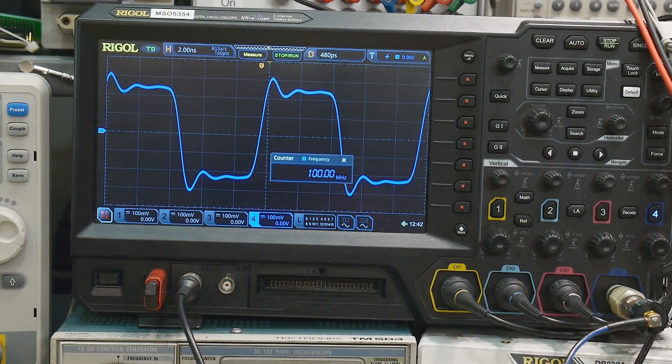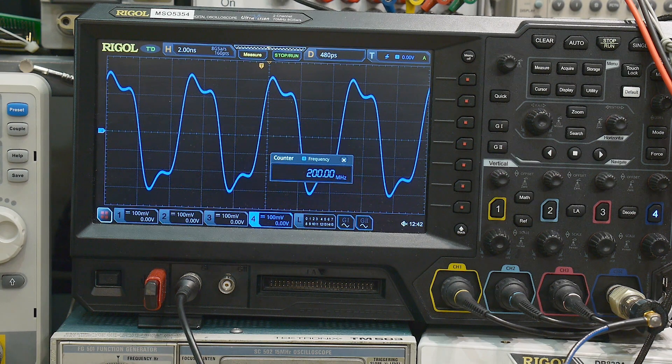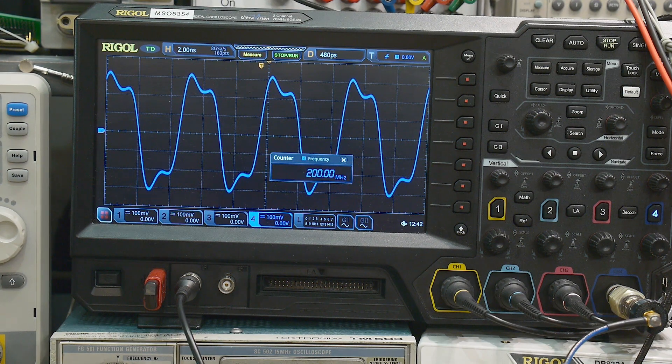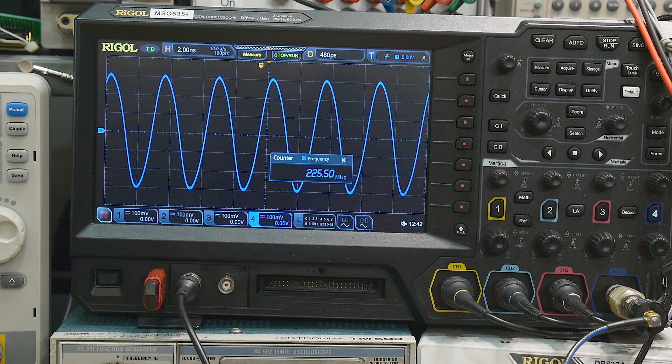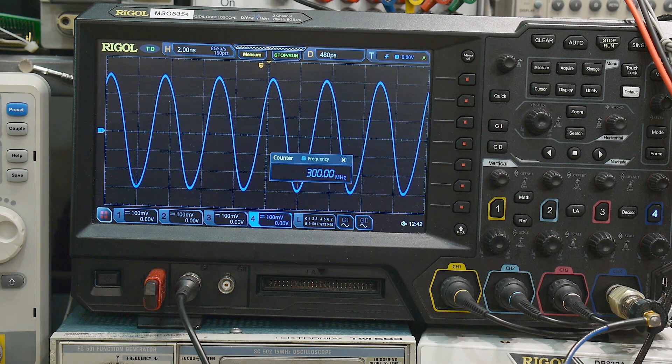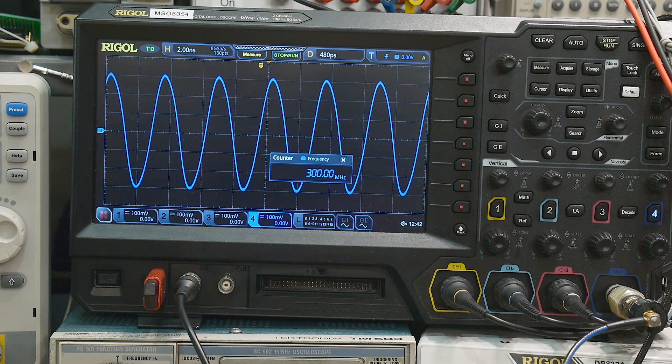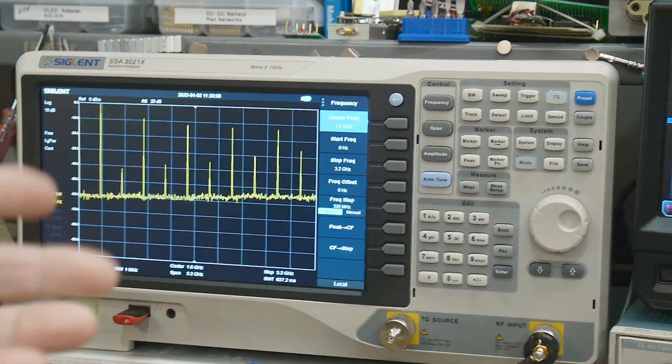So let's bump the frequency up here, 200 megahertz, and I have the frequency counter on too, so you can read that. So at 300 megahertz, it's turned into a sine wave. But you can see that we're still outputting a square wave.